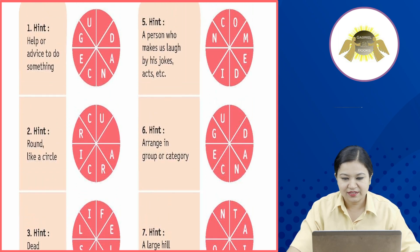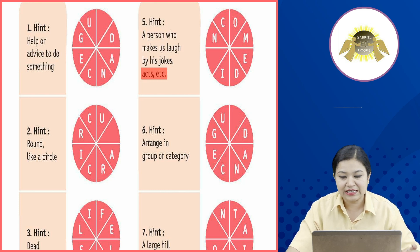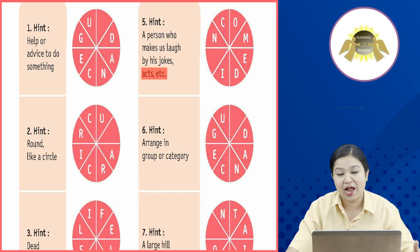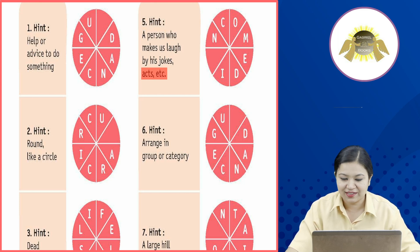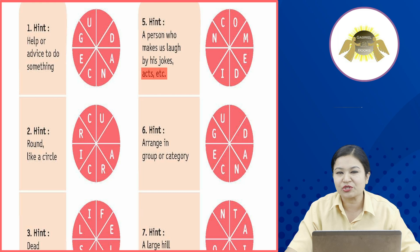Fifth hint: a person who makes us laugh by his jokes, acts, etc. एक ऐसा person जो हमें हसाता है उसके joke और act से — वो 'comedian' कहलाता है। तो आप यहां पर जो space दिया गया है वहाँ A लिखेंगे और इस तरह यह word complete हो जाएगा।